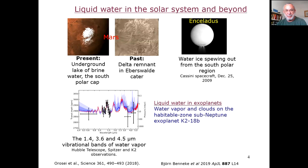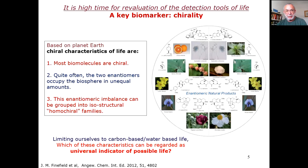The second motivation is the massive detection of liquid water everywhere — not only in the solar system, for instance on Mars in the past, in this delta remnant, present at the South Pole, in the solar system moons, and even in exoplanets, where we have definitely detected absorption lines of water. Therefore, it is high time for reevaluation of the detection tools of life. The key biomarker, from that point of view, on which I'm going to talk, is chirality.